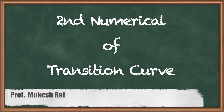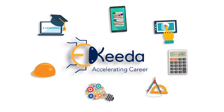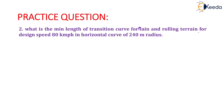Hello students. Today we are going to solve the second numerical of transition curve. The question is given as: what is the minimum length of transition curve for plane and rolling terrain for a design speed of 80 kilometers per hour in a horizontal curve of 240 meter radius?